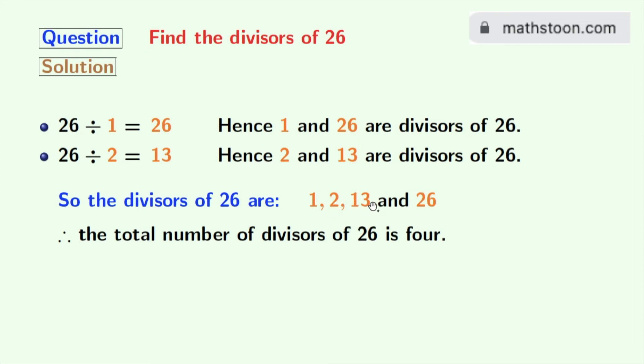Now give a close look at these divisors and see that 2 and 13 among these numbers are prime numbers. Because these two numbers do not have any divisor other than 1 and that number itself. So, we can say that the prime divisors of 26 are 2 and 13.